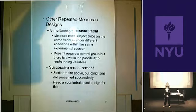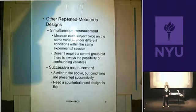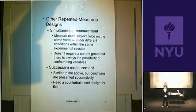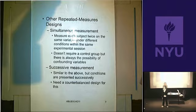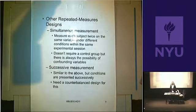Sometimes you can't present things simultaneously. If you can't, the other option is to present them successively. Successive measurements are one after the other — they may still be within the same experimental session, but you present A and then B. There's going to be an essential problem with this successive presentation because you're presenting things in a particular order. This needs a counterbalance design, which we'll get to.